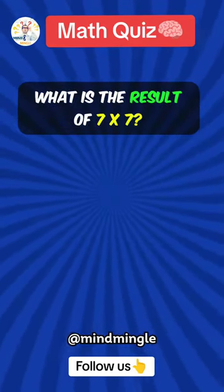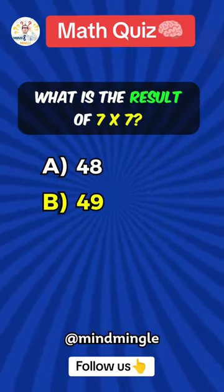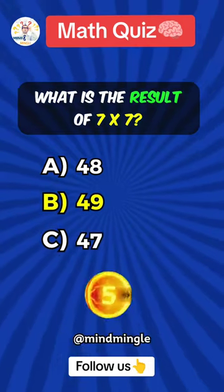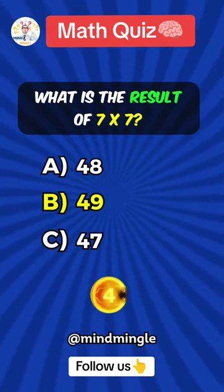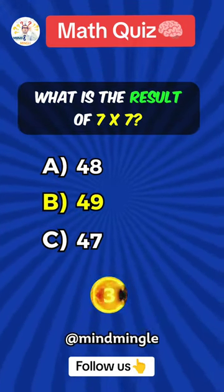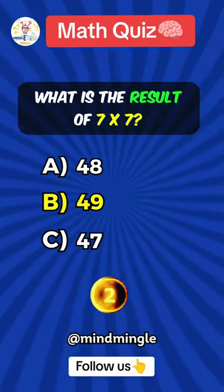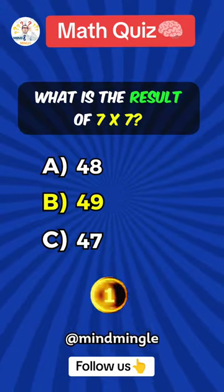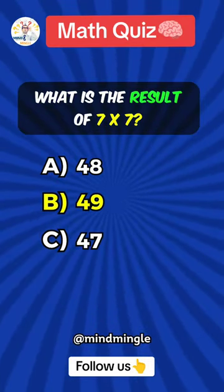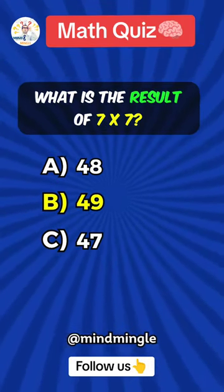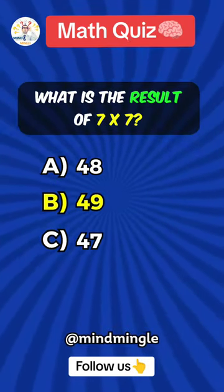What is the result of 7 times 7? Answer B: 49.